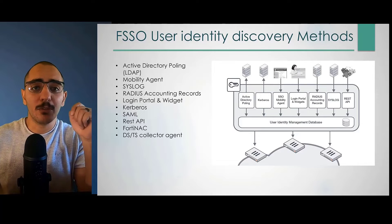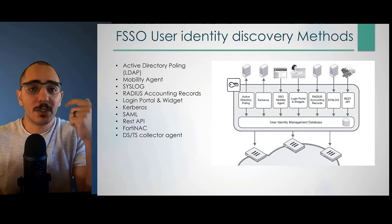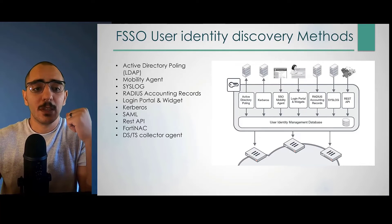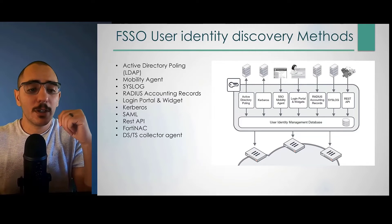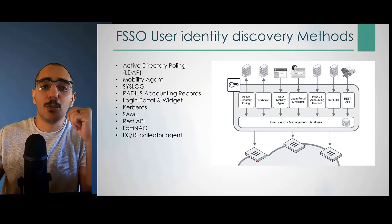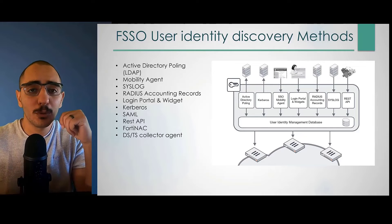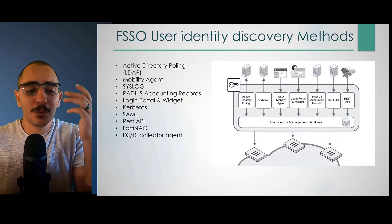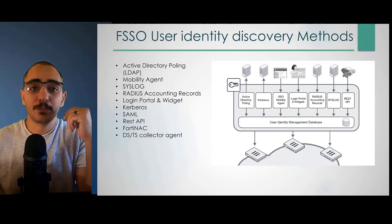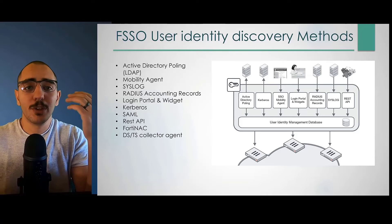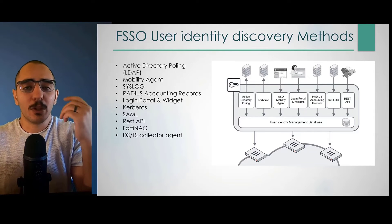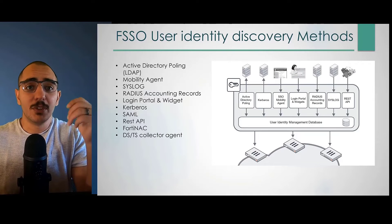In the syslog message itself, FortiAuthenticator is able to extract the user logon, the IP address, and keep track of the user through the syslog. It can also do that through RADIUS accounting records, through login portal and widgets, and through Kerberos. You can also use SAML authentication. It can pull identity information from REST API or from FortiNAC, which is another Fortinet product. Also, it can pull information from DCFS collector, which is installed on the Windows server itself.